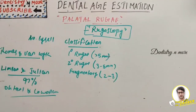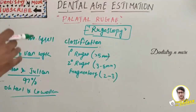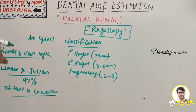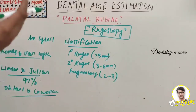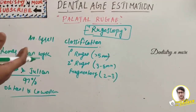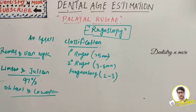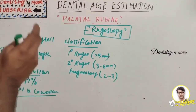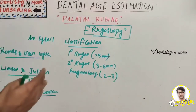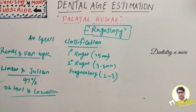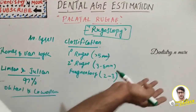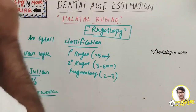The disadvantages are that changes from orthodontic treatments, extractions, aging, dentures, and extreme finger sucking in infancy may hamper the identification process. Additionally, we always need antemortem data to compare with postmortem data — so this method is only useful when antemortem records are available.